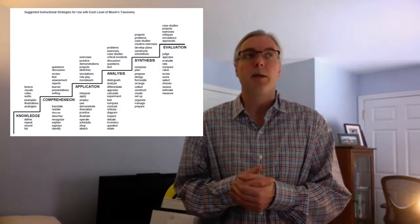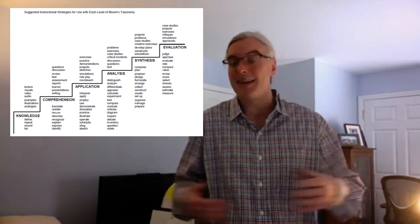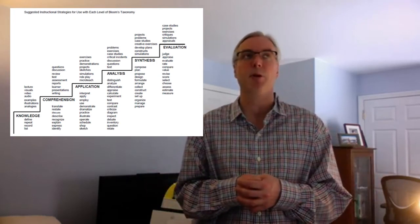So cognitive taxonomies, where did they really come from? Well, back in the mid-50s, a scientist and psychologist—I think it was David Bloom, it's definitely Bloom—his team came up with this idea of Bloom's taxonomy around 1956.